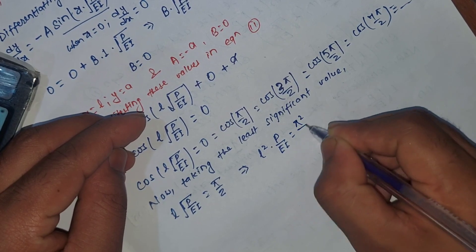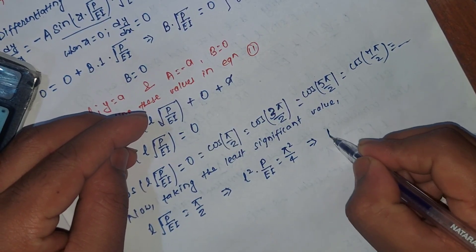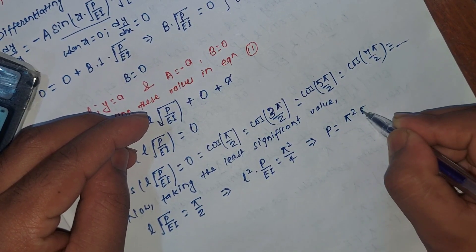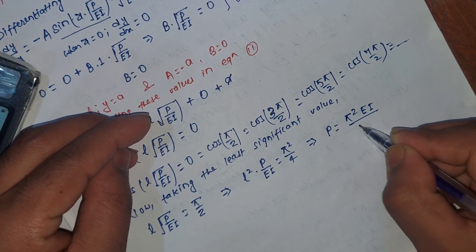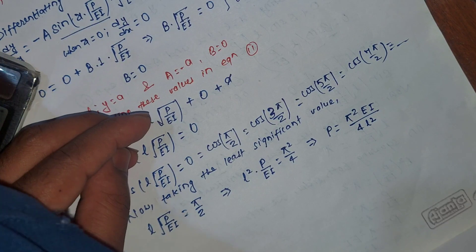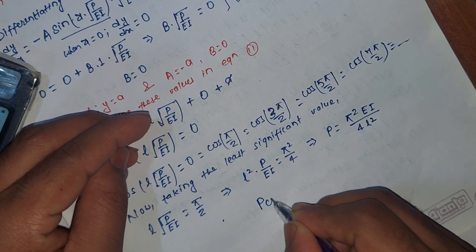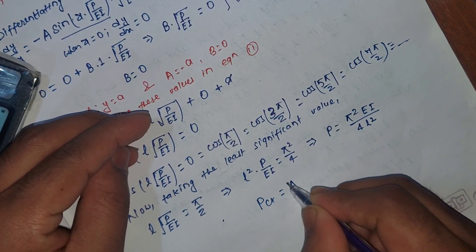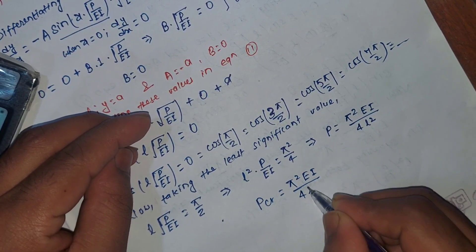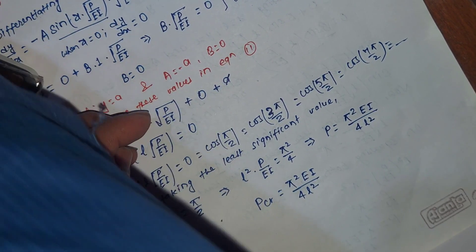Applying the third boundary condition leads to: cos(L·√(P/EI)) equals 0, so L·√(P/EI) equals π/2. Solving for P, the critical load is: P_cr is equal to π²EI divided by 4L².